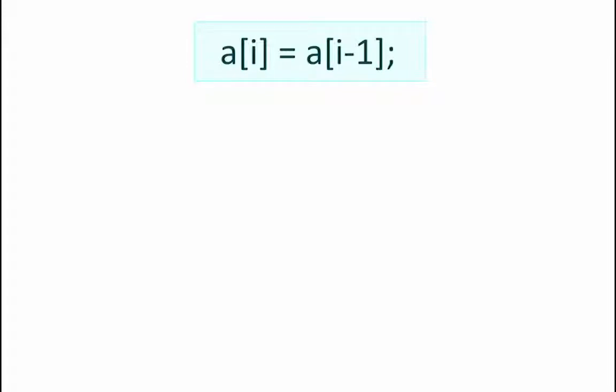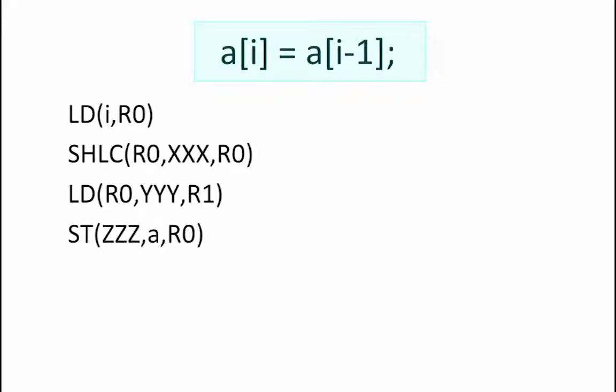For this next code segment, we are going to take a look at how a compiler would convert array accesses into beta code. Once again, we are given partially completed assembly code to help us understand how the compiler translates this high-level code into beta assembly. We begin with a load of the values stored at location i into register R0. i is the index into our array. However, since the beta is byte addressed, but it deals with 32-bit values, that means that each array element requires 4 bytes of storage. So, in order to point to the correct location in memory, we need to multiply i by 4.